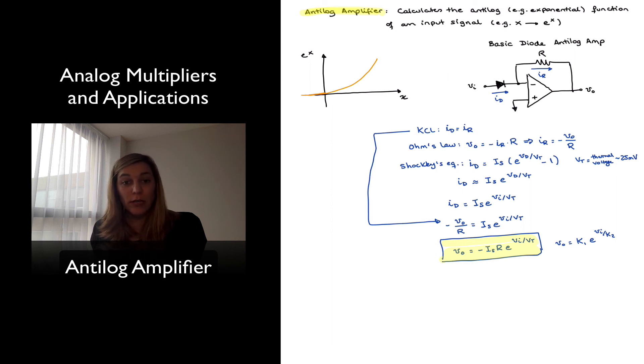Next, we're going to take a look at how we can combine a log amp and an anti-log amp to create an analog multiplier, which is op amp-based.